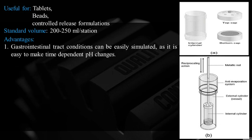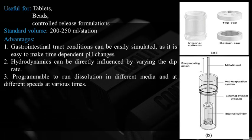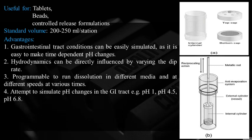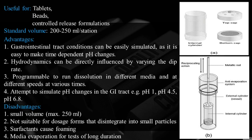The cylinder moves horizontally toward different rows of vessels within specified time intervals. Withdraw the solution from the midzone between the surface of the dissolution medium and the bottom of each vessel. Used for tablets, beads, and controlled-release formulations; standard volume is 200–250 mL per station. Advantages: GI tract conditions can be simulated with different pH in each row, hydrodynamics can be varied by changing dip rate, programmable to run in different media at different speeds. Disadvantages: small volume (max 250 mL), not suitable for dosage forms that disintegrate into small particles, potential for foaming during dipping, media evaporation in long tests.